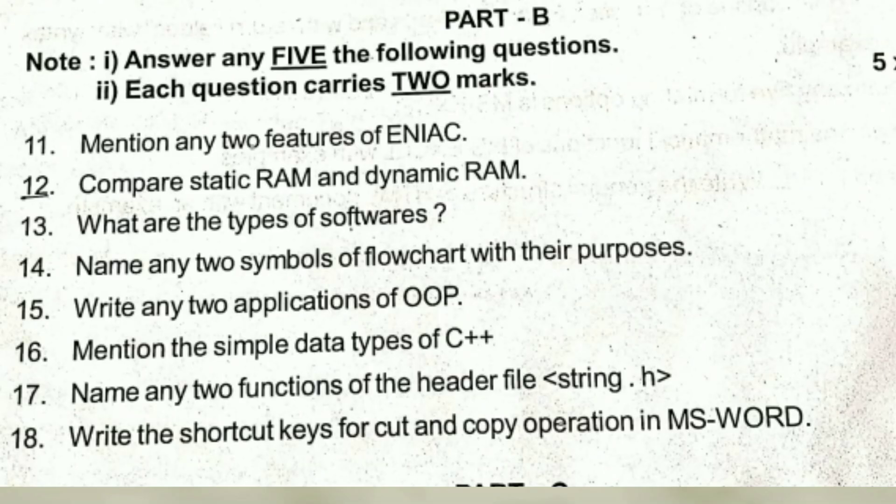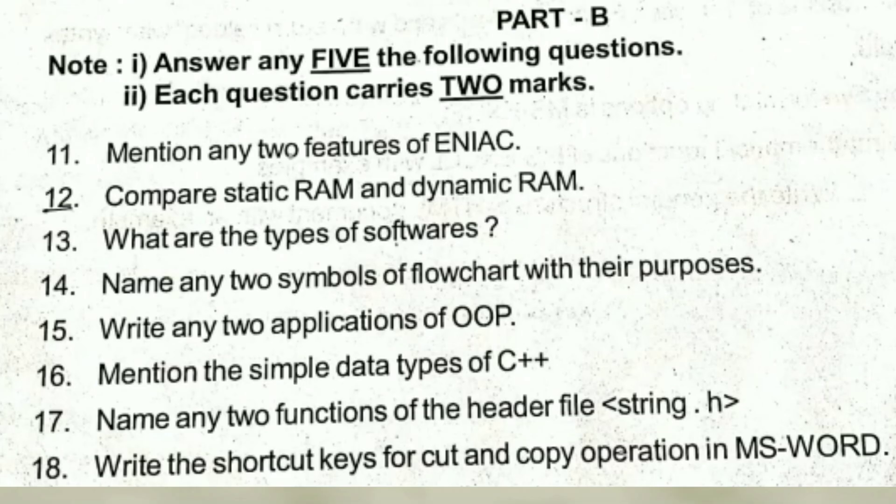Next is part B. In this part B, you need to answer 5 questions for 2 marks each. Totally 8 questions will be given, question number 11 to question number 18. You need to answer any 5 questions. Out of these 11 to 18 questions, the first 3 questions will be from unit A, fundamental of computers.